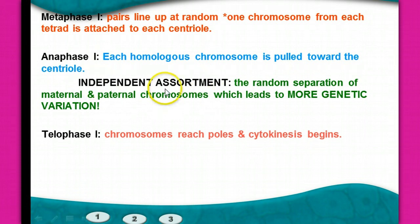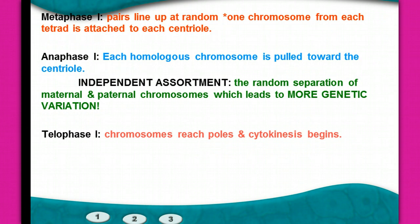Independent assortment is a term I really want you to remember. No matter who you have for second semester biology, they're going to talk about independent assortment of genes. The random separation of maternal and paternal chromosomes leads to more genetic variation.